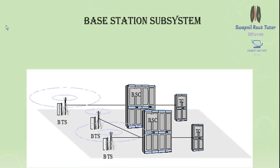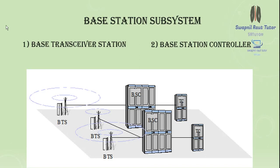The Base Station Subsystem consists of two parts: the Base Transceiver Station (BTS) and the Base Station Controller (BSC). MS communicates with the BTS. The BTS establishes communication between the MS and BSC. It encodes, encrypts, multiplexes, modulates, and feeds the RF signal to the antenna, and consists of transceiver units. It forwards the request to the BSC.